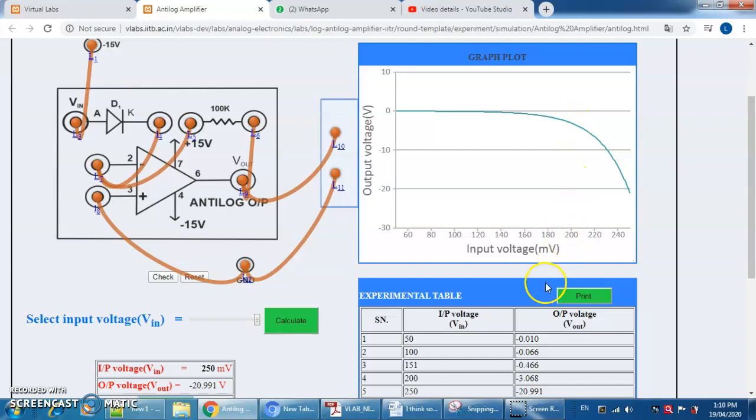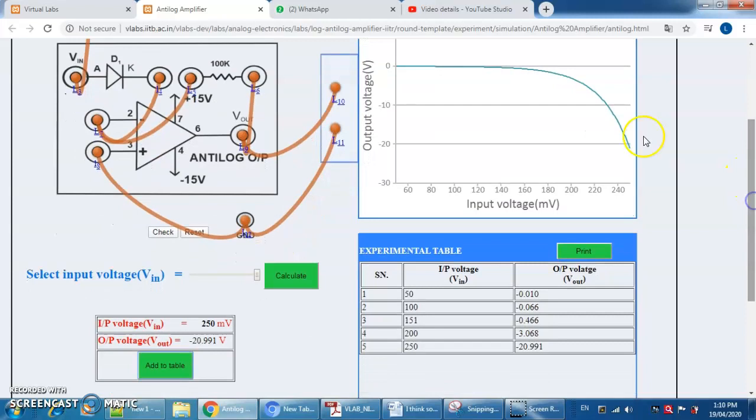So from this graph I can observe that in log amplifier I got output voltage decreasing exponentially. In anti-log amplifier we will get this output voltage very rapidly.